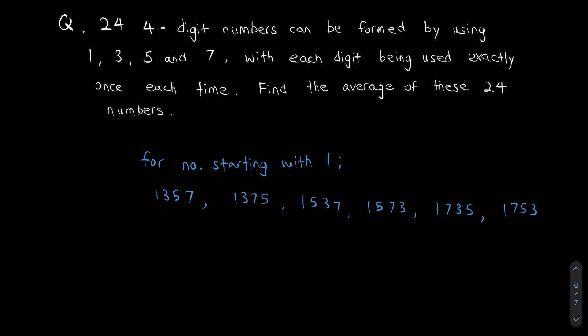You can imagine for numbers starting with 3, there's also going to be 6 numbers. Numbers starting with 5, 6 numbers, and numbers starting with 7, 6 numbers. So they are nicely divided into four little groups like this.